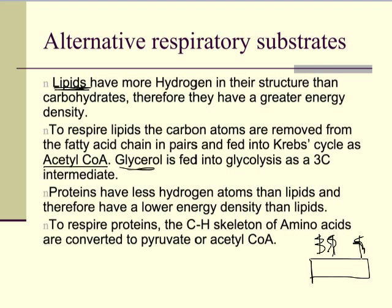The glycerol actually goes into glycolysis as one of the three-carbon intermediates — GALP, or glycerate 3-phosphate. If you have a look on page 152 in your textbook, there's a diagram in one of the blue 'did you know' boxes that shows how it all feeds into the Krebs cycle.